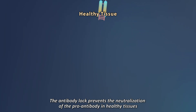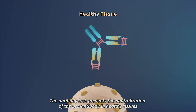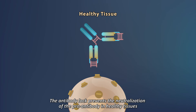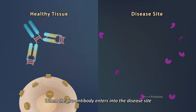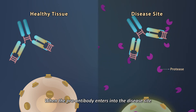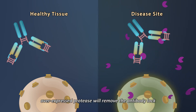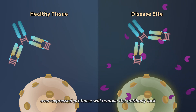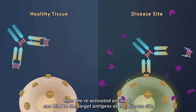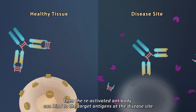The antibody lock prevents the neutralization of the pro-antibody in healthy tissues. When the pro-antibody enters into the disease site, over-expressed protease will remove the antibody lock. Then, the reactivated antibody can bind to the target antigens at the disease site.